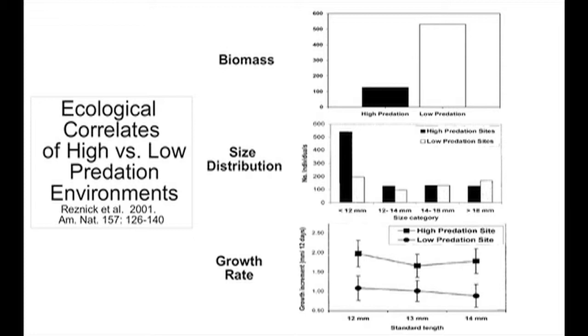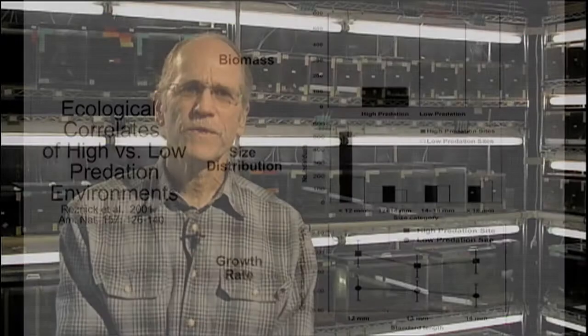In the middle panel, you're looking at the size distribution of guppies from high versus low predation environments. High predation is the solid bars and low predation is the open bars. On the horizontal axis, on the left-hand side are small juvenile guppies, and as you move to the right you're looking at progressively larger guppies. The two right-hand bars are adult size classes. What you see is that populations in high predation environments are dominated by small individuals, whereas populations in low predation environments are more even in their size distribution.